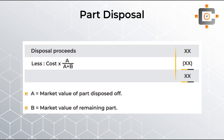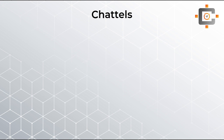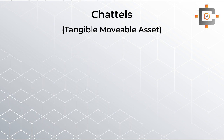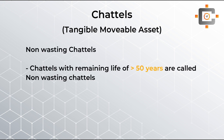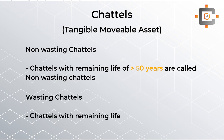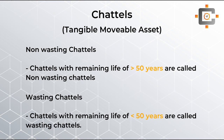The next concept is chattels — tangible movable property. There are two types: non-wasting chattels, which are chattels with a useful life of more than 50 years, and wasting chattels, which have a remaining useful life of less than or equal to 50 years.